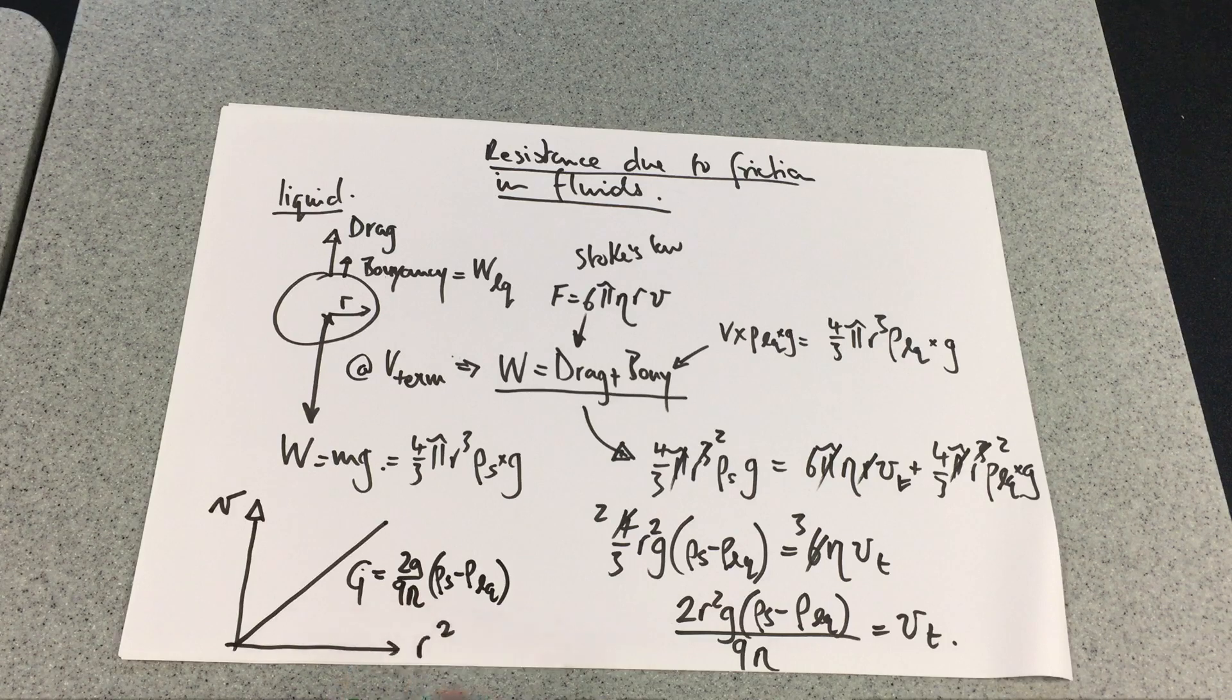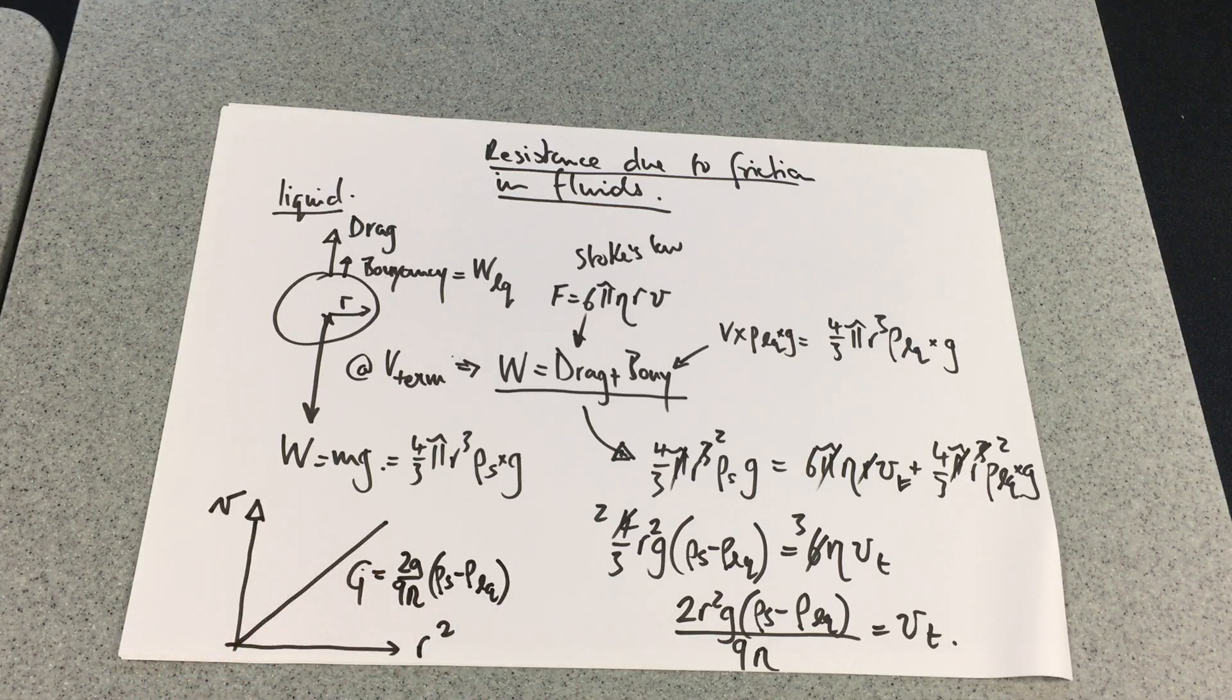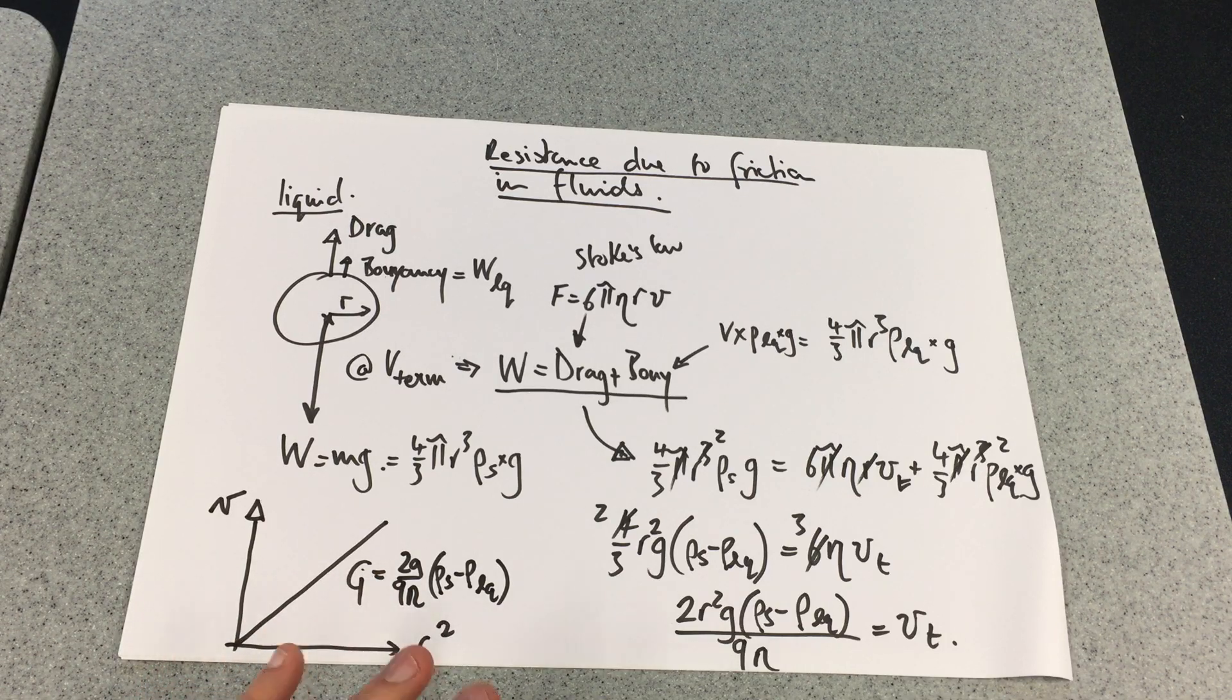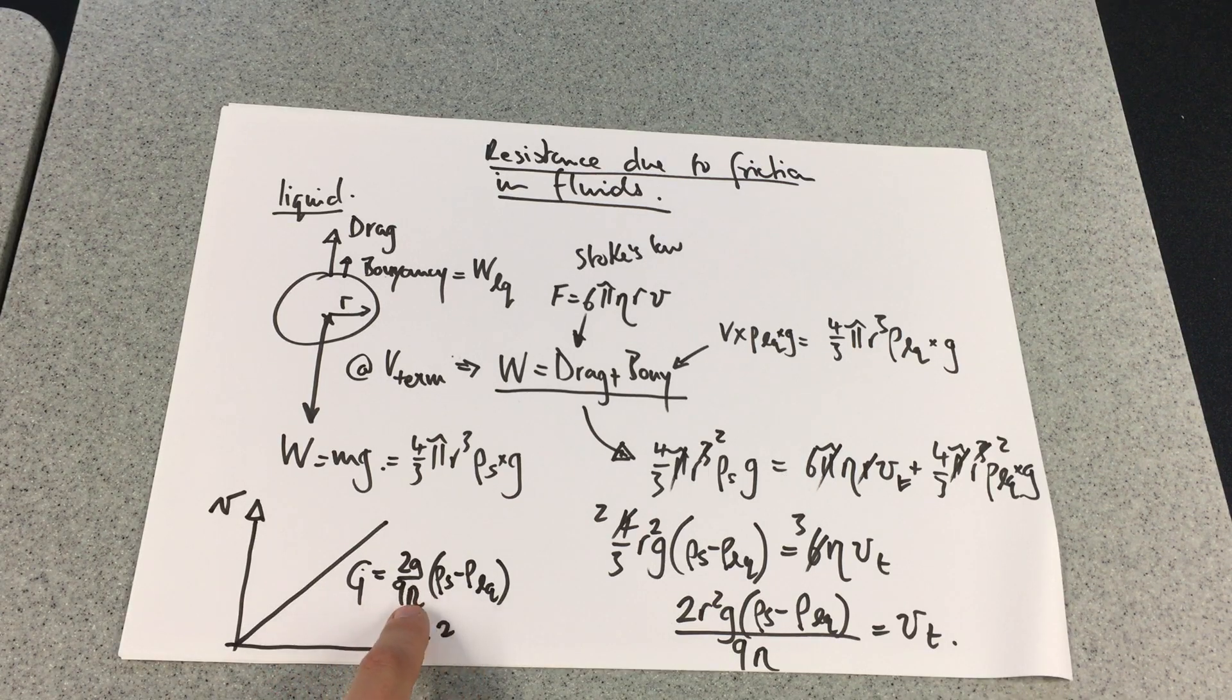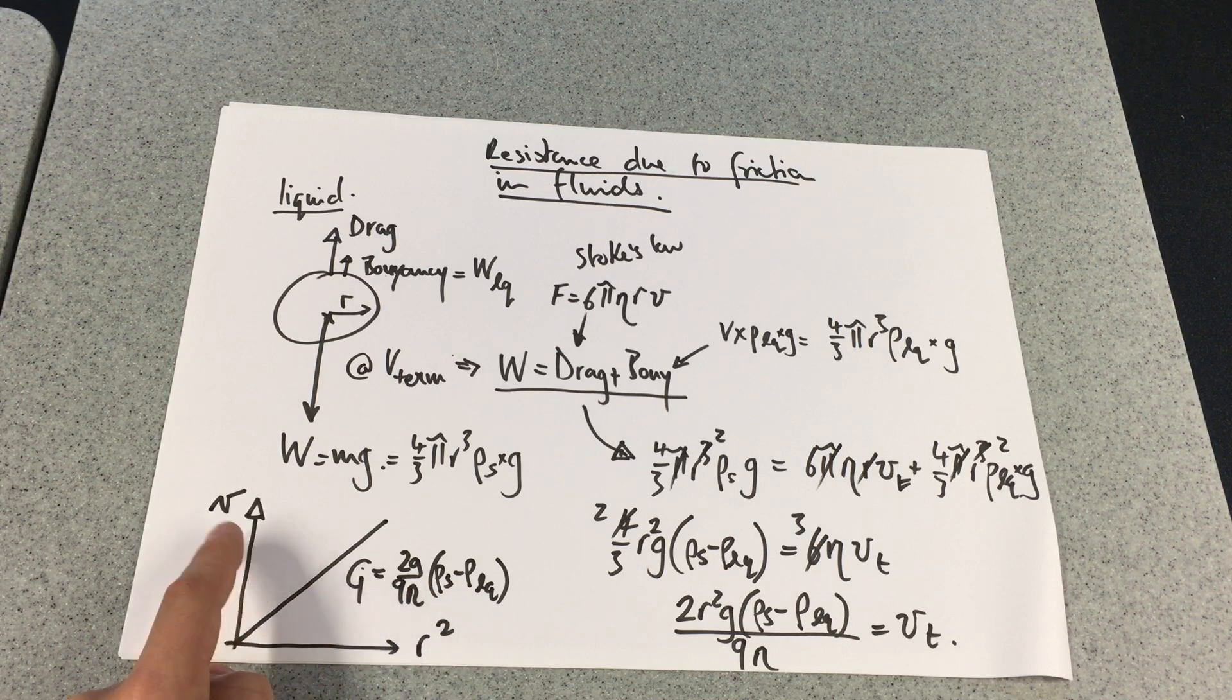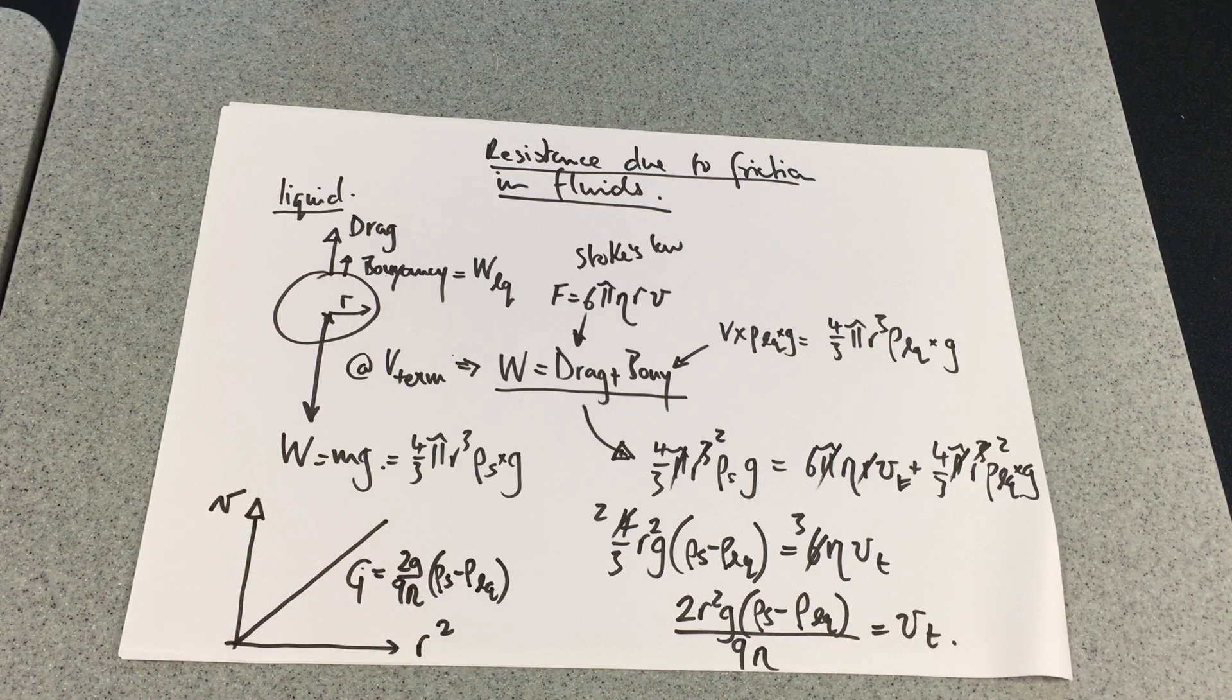This is all one big constant, so it should remain the same. We don't need to work this out, but these values could be discovered to see whether v against r² is proportional.